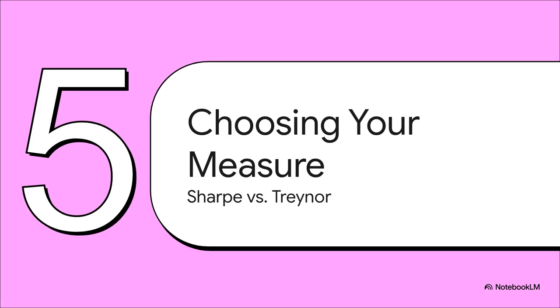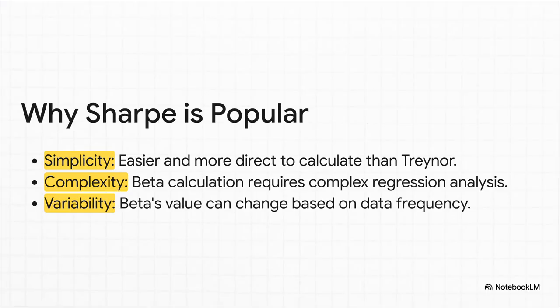If the Treynor ratio offers this more specific, sophisticated view of risk for diversified portfolios, why isn't it as popular as the Sharpe ratio? It really boils down to two things: complexity and consistency. Calculating beta isn't exactly plug-and-play — it requires a statistical regression, and your beta can actually change depending on whether you use daily, weekly, or monthly data. The Sharpe ratio, while maybe less precise, is simpler and gives you one consistent number, which is why so many people still prefer it.